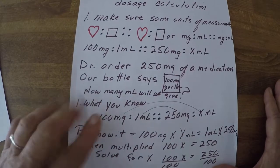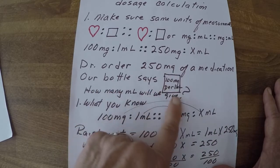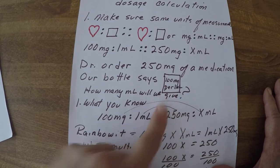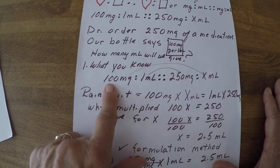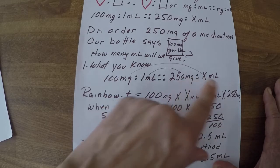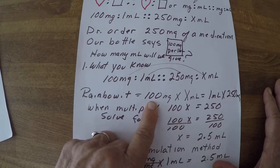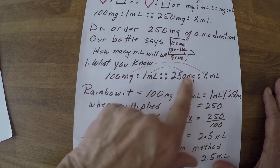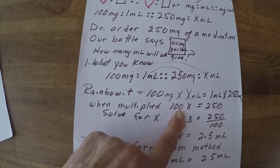Let's put it into a problem. Our physician has ordered 250 milligrams of a medication. Our bottle shows we have 100 milligrams per 1 ml, and we need to find how many ml we will give. First, put down what you know: 100 milligrams is 1 ml. The physician ordered 250 milligrams. We rainbow it — 100 times x and 1 times 250 — giving us 100x equals 250.